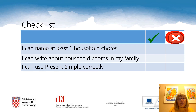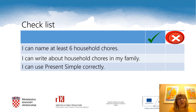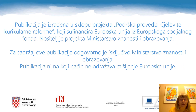We have come to the checklist. There are three statements here: I can name at least six household chores; I can write about household chores in my family; and I can use present simple correctly. Please put a tick or a cross next to each statement depending on whether you can do it or not. Anyhow, I certainly do hope that there will be more ticks than crosses. I hope you liked today's lesson. Thank you for watching, and until we meet again, bye-bye!